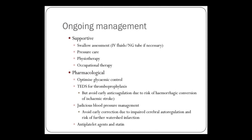Breaking down the management: supportive and pharmacological. You need to do a swallow assessment early on to see if the patient is at risk of aspiration — if they are, they might need an NG tube and fluids. Pressure care: if the patient is unable to move their limbs, it's very important to have good nursing and move the patient around to reduce the risk of pressure sores, which can become infected. Physiotherapy and occupational therapy are key to improving morbidity after stroke and improving function.